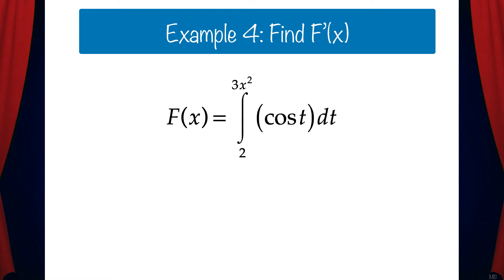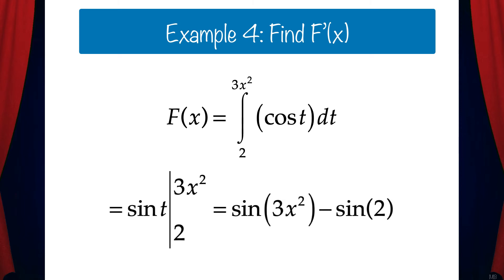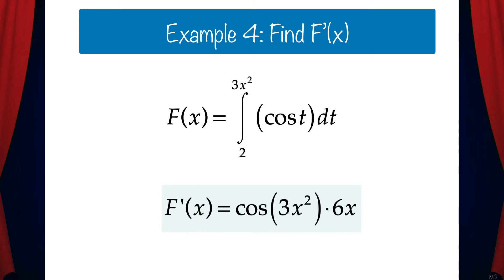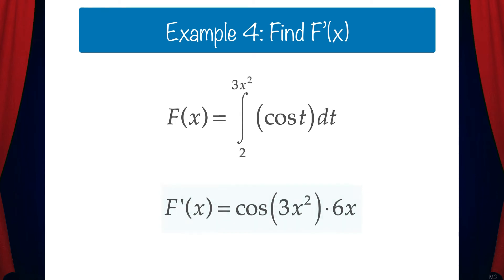Now here's an interesting example. Capital F of x is the integral from 2 to 3x squared of cosine t dt. In order to find the derivative let's first solve this the long way. The antiderivative of cosine t is sine t, and we'll evaluate that from 2 to 3x squared. That gives us sine of 3x squared minus sine of 2. Now when we take the derivative we get cosine of 3x squared times 6x by the chain rule.